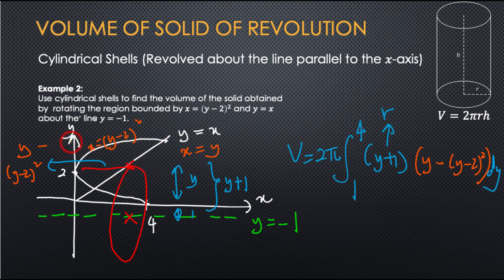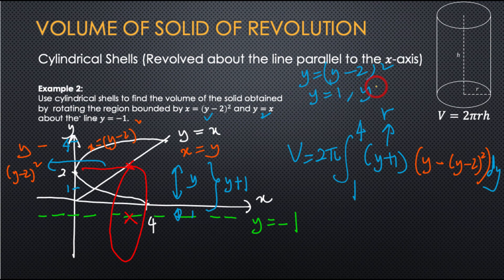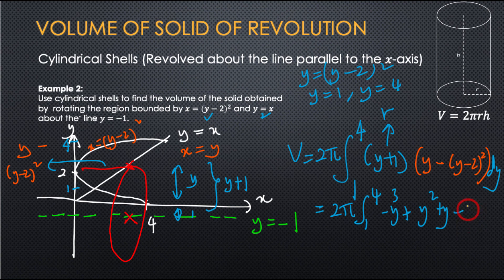For the limits, it is from 1 to 4. You have to solve the simultaneous equations between the two curves: y equal to (y minus 2) squared, which gives y equal to 1 and y equal to 4. You can continue and expand to get the integral of minus y-cubed plus y-squared plus y minus 4, dy. This equals 63π over 2.